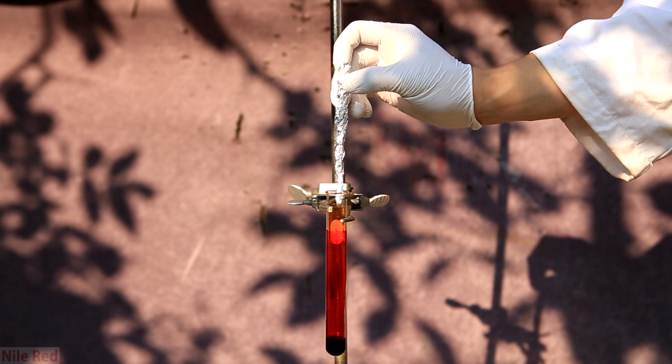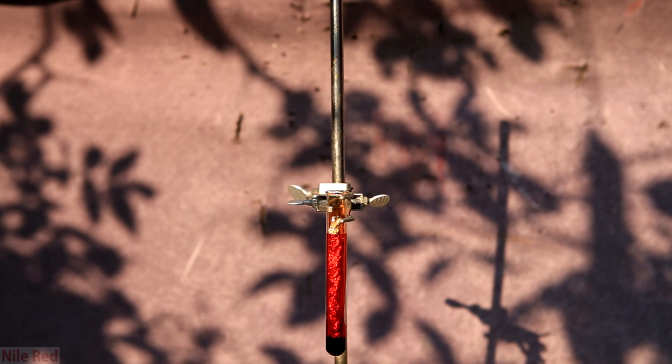Then, aluminum foil is added to the test tube. Due to the protective oxide layer on the outside of the aluminum, it takes a little while to react. The aluminum reacts violently with the bromine to form aluminum bromide.